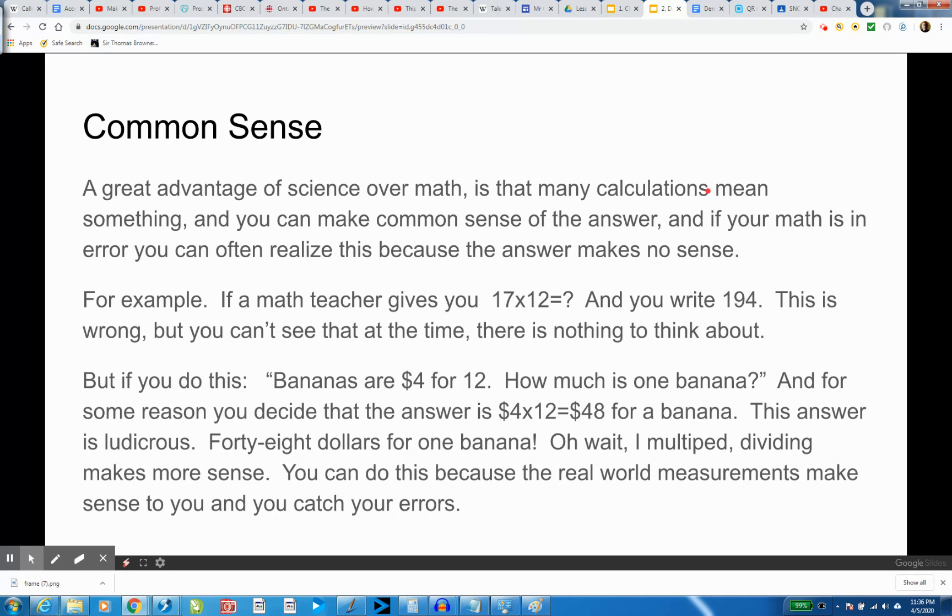And you realize, well, what if I did 12 divided by 4? That'd give me $3 a banana. But it's four, no, it's four divided by 12, and that's one third of a dollar. Yeah, that works out. You know what I mean? You can think your way to the answer.